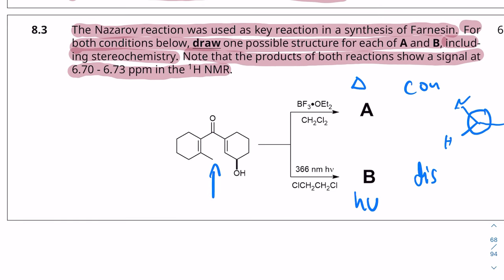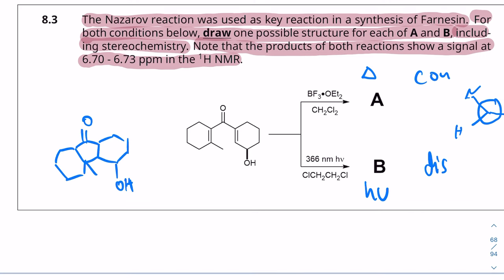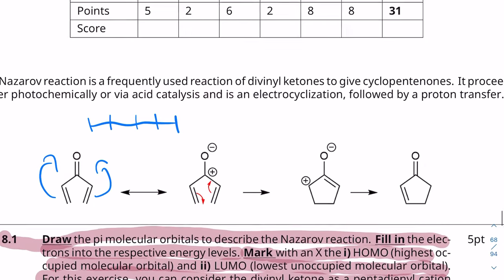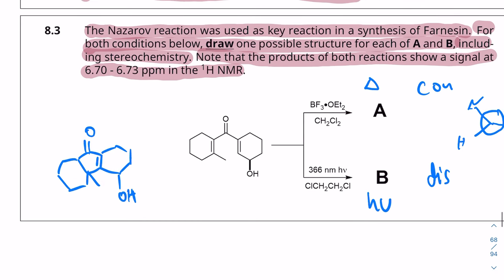So first, let's figure out without stereochemical details what the reaction is going to be. So again, it's a Nazarov reaction. So we're going to have a five-membered ring in the center with two six-membered rings next to it. Now, if you just looked at this and the reaction scheme above, you would assume that this is the product that we get. However, let's revisit the text. It says it has an NMR peak between 6.7 and 6.73, which is in the region where hydrogens on sp2 carbon atoms are.